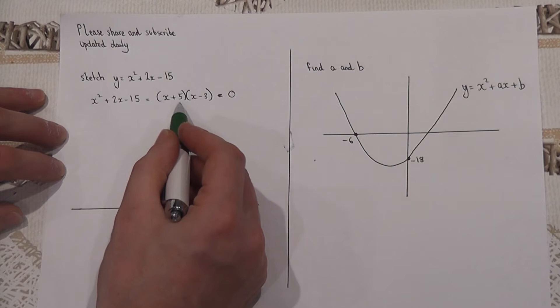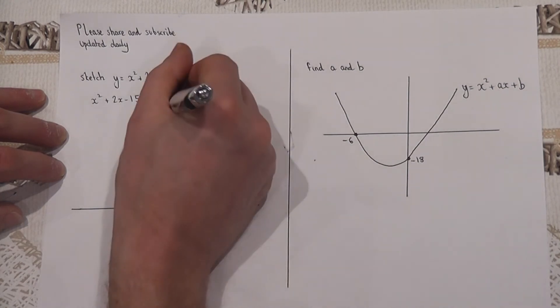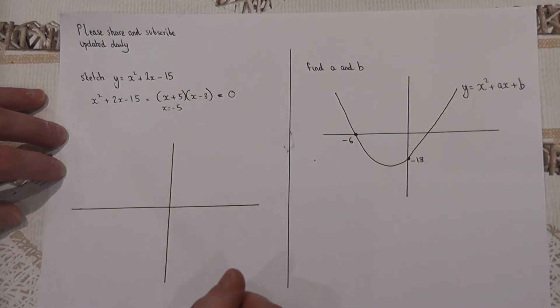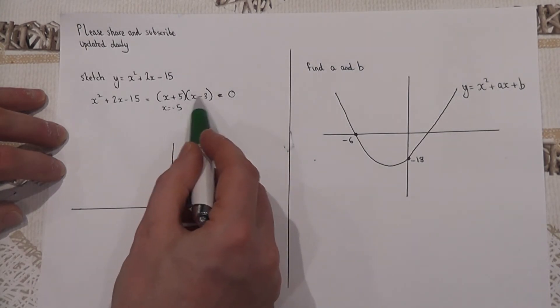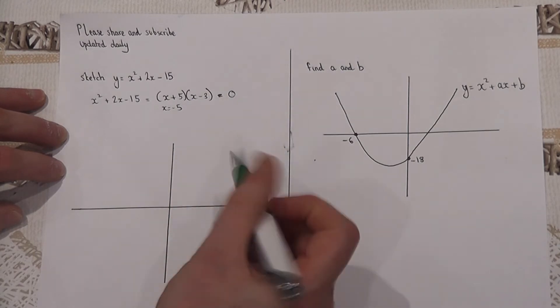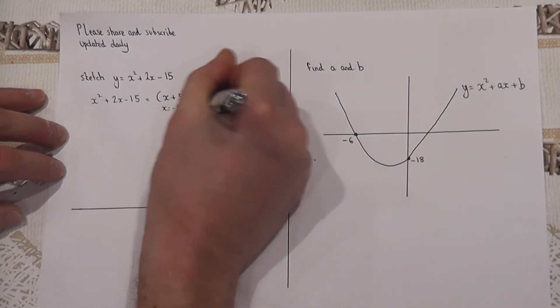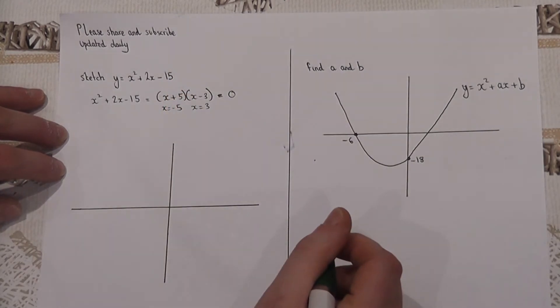Now to make them zero, if x is minus 5 then minus 5 plus 5 equals zero, so x equals minus 5 is one of the roots. Or if x is plus 3, plus 3 take away 3 also equals zero, so x equals 3 is also one of the roots.